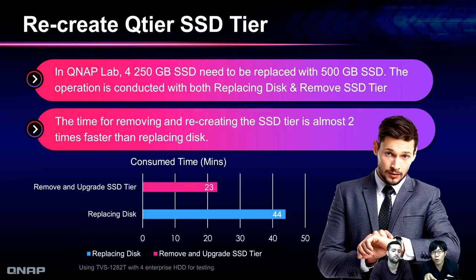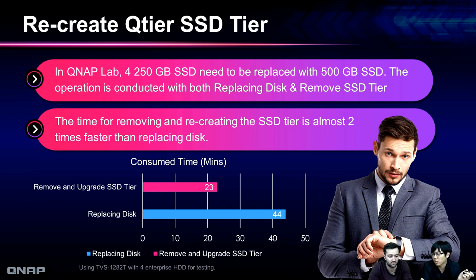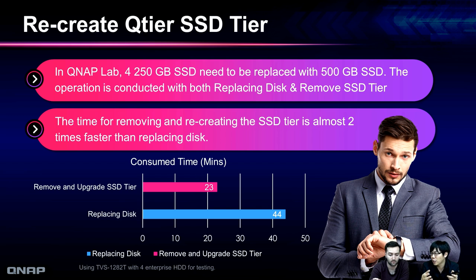Here is a simple experiment done in the QNAP lab: we used four 215GB SSDs and wanted to replace them with 500GB SSDs. We recorded the time for the remove and upgrade process. Because this was a more powerful NAS — the TS-1282T — we only required 23 minutes to finish the whole remove and upgrade process. Replacing one-by-one may need another 20 minutes, including manually unplugging and inserting disks and waiting for the rebuild to complete. With the remove QTier SSD tier feature, IT managers can easily configure the SSD and try different configurations.